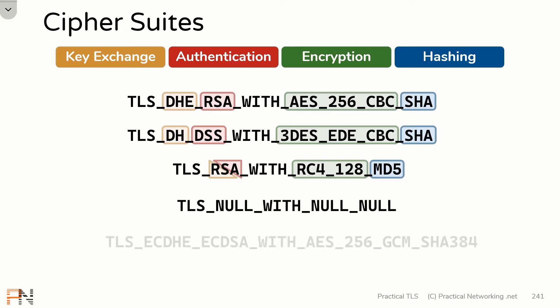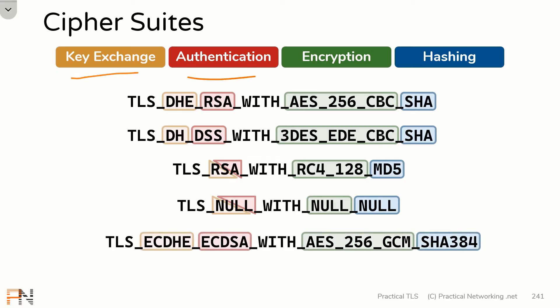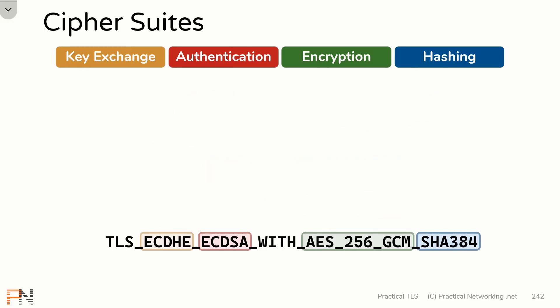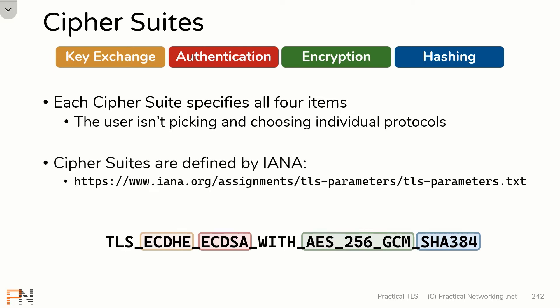Here are two additional cipher suites. These two are actually the least secure and the most secure cipher suites as of the time of this recording, and in each case, both of these cipher suites still provide four elements. When a client and a server are speaking to one another, they are not creating cipher suites on the fly — they're actually choosing from a list of pre-built cipher suites.